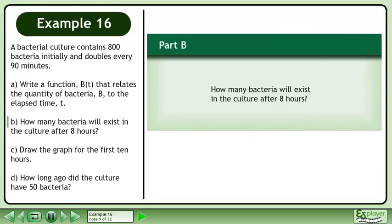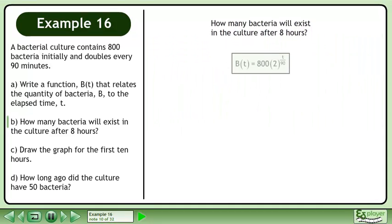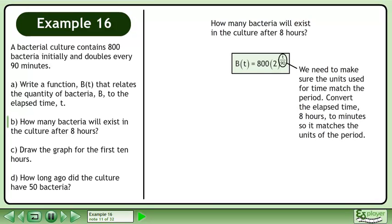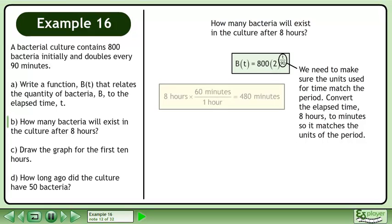Now we'll move on to Part B: how many bacteria will exist in the culture after 8 hours? We write the function from Part A: b equals 800 times 2 raised to the power of t over 90. We need to make sure the units used for time match the period. Convert the elapsed time, 8 hours, to minutes so it matches the units of the period. 8 hours is equal to 480 minutes.